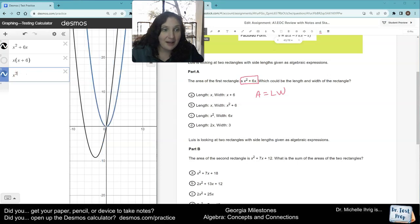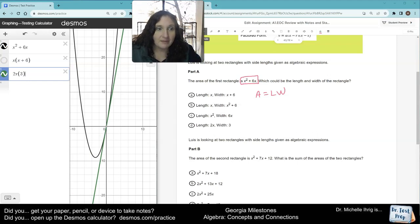And then if I have 2x times 3, that's also not the same graph. So it has to be letter a because that's the only one that the black and the red graph are the exact same. So we know that that's the correct answer, letter a.